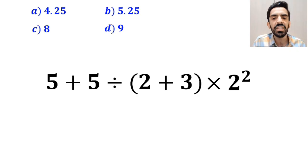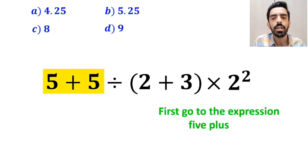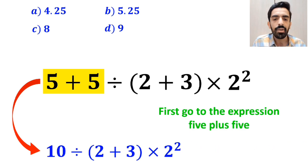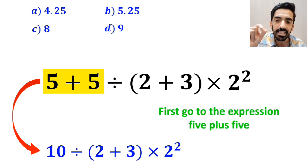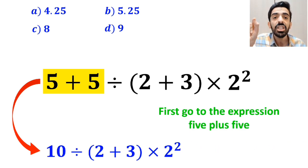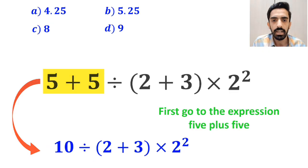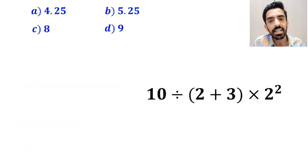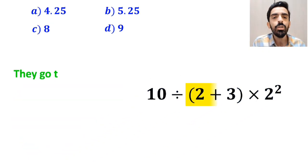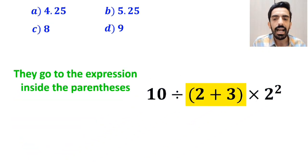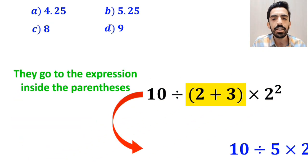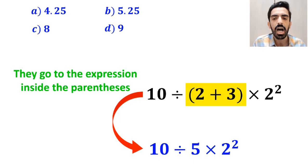Many people, to solve this question, first go to the expression 5 plus 5, and instead of this expression, they write 10 divided by 2 plus 3 inside the parenthesis, then times 2 to the power of 2. In the next step, they go to the expression inside the parenthesis and simplify this expression to 10 divided by 5 times 2 to the power of 2.